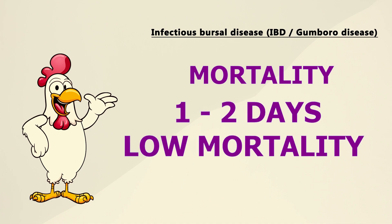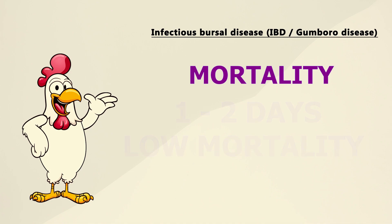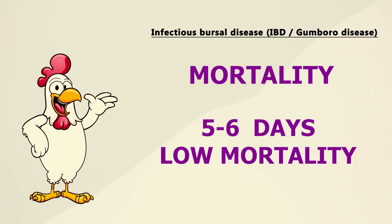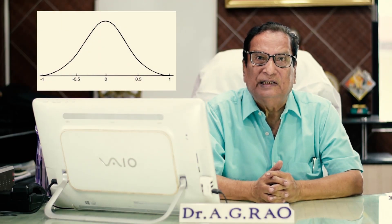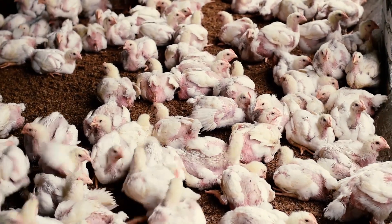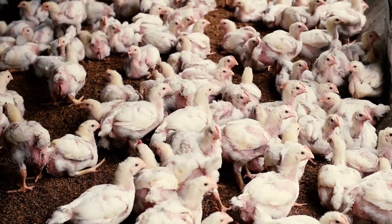In the first two days, mortality is low. On the third and fourth day, mortality is highest. Again on the fifth and sixth day, mortality suddenly decreases — a bell curve mortality pattern, just like a bell. This mortality pattern is very typical of IBD. Virtually 100% of birds will be affected — morbidity is near 100% — while mortality will be around 20 to 25%.